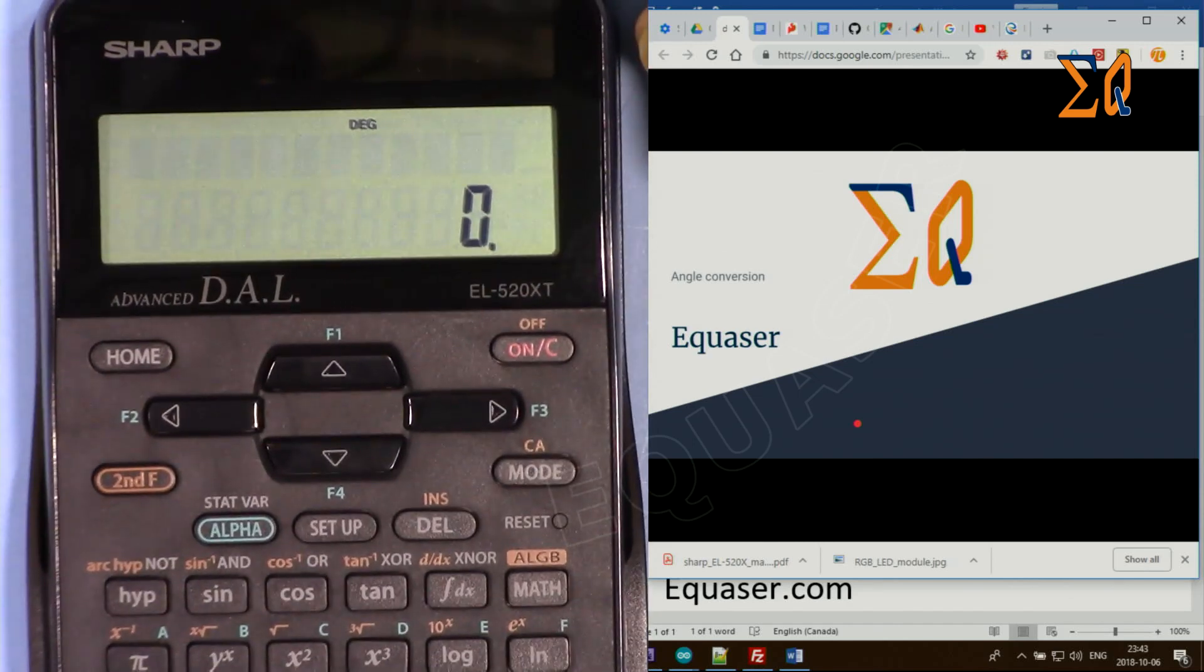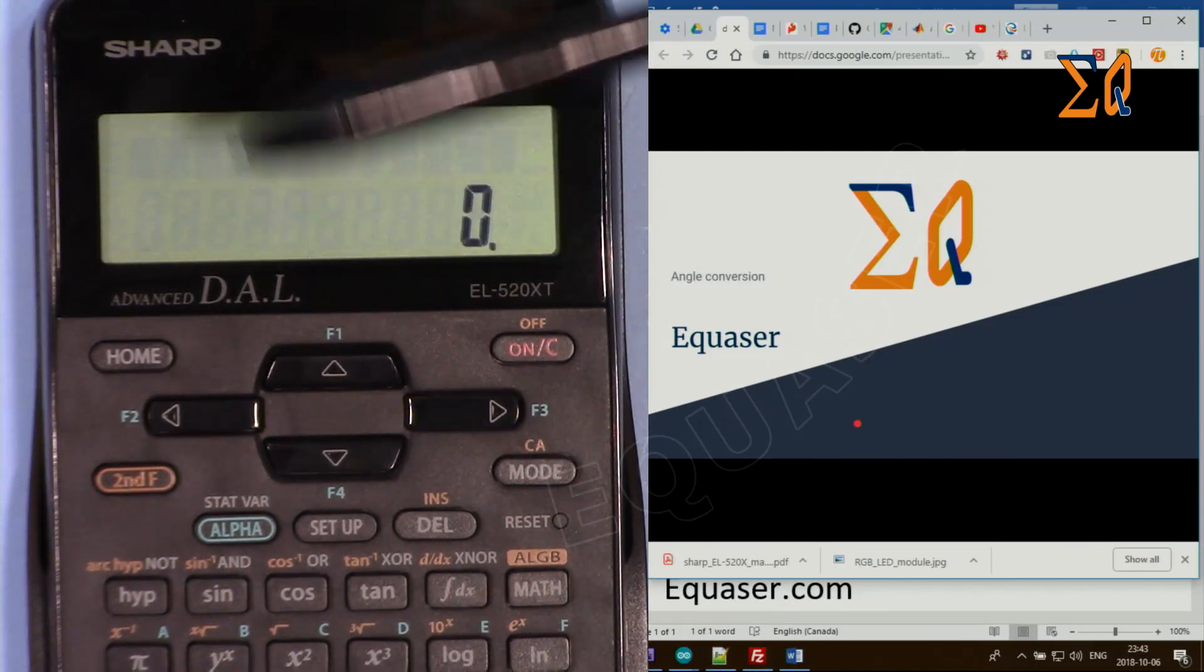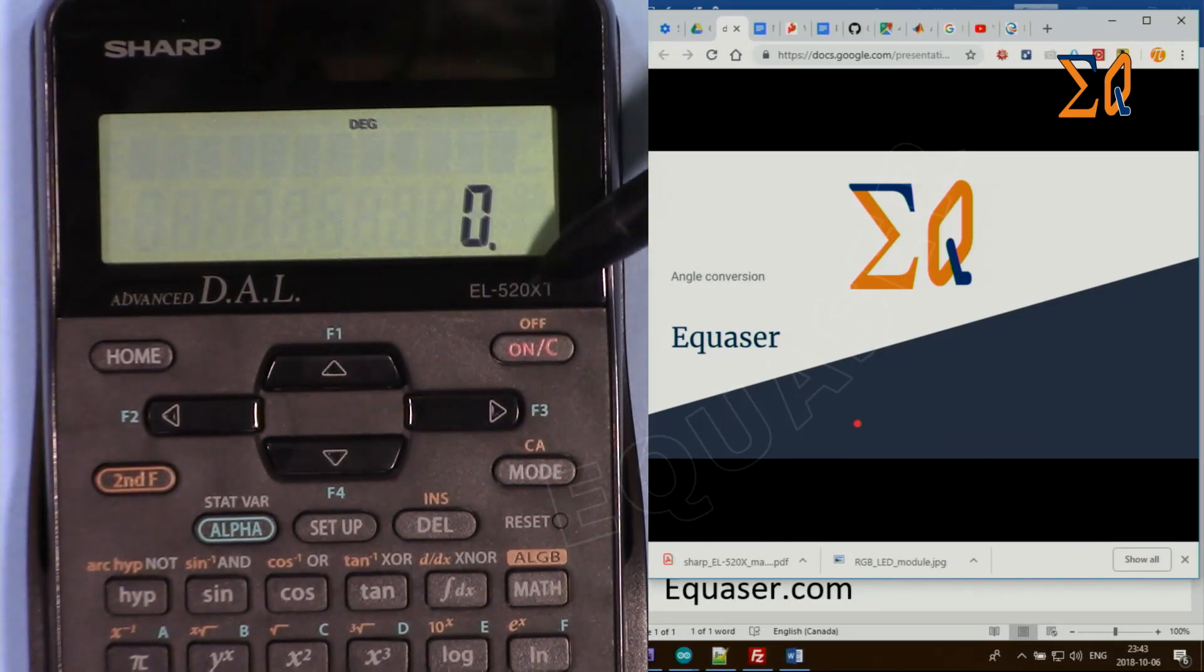Hi, welcome to a calculator tutorial by Equasor. In this video, we're going to see how we can use this SHARP EL-520X and 520XT calculator to convert degrees, radians, and gradients from one to the other.